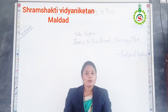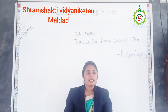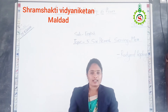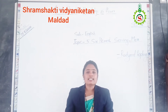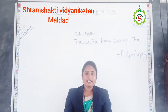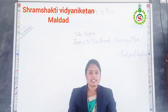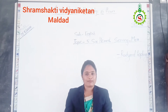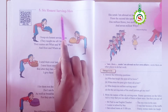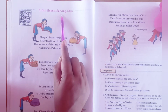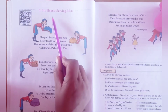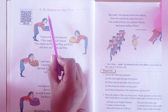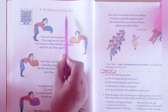In this poem, the poet keeps 6 honest serving men. How does he treat those 6 honest serving men? We are going to see in this poem. Now open your English textbook to page number 10, Unit number 1, Poem number 5: '6 Honest Serving Men'.